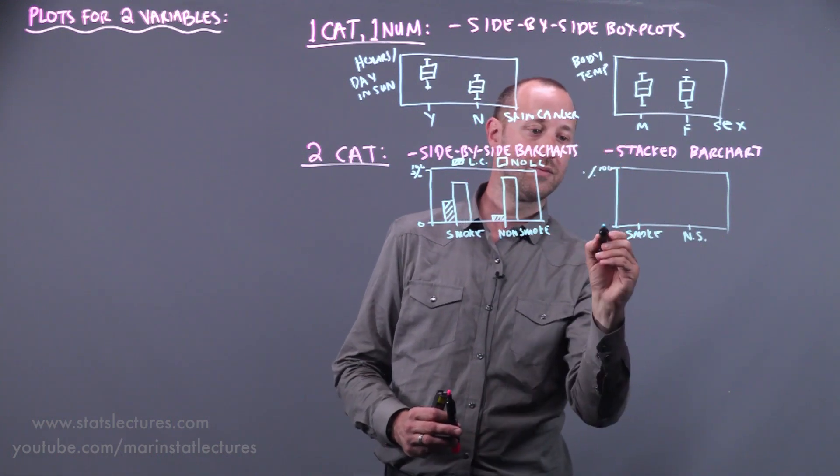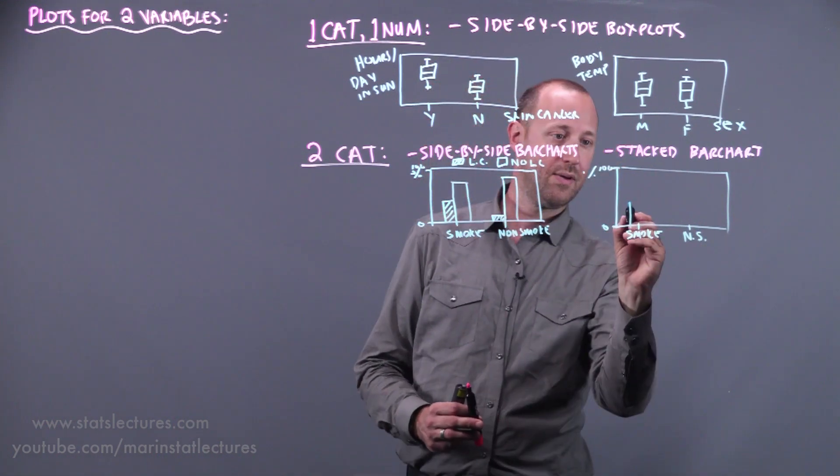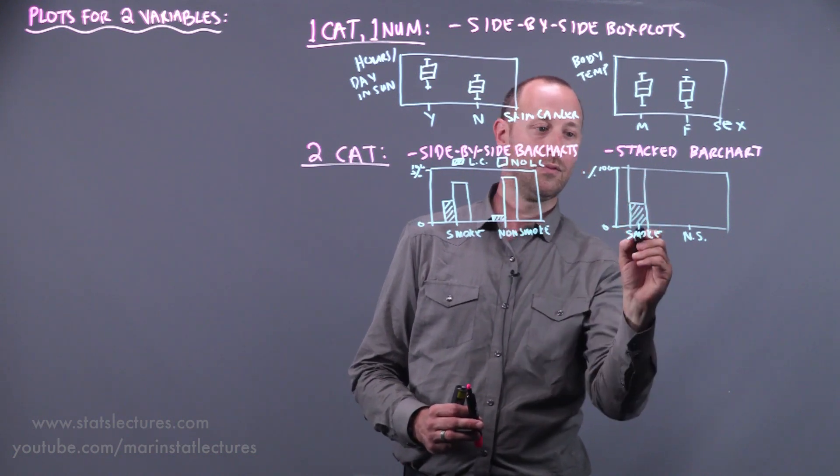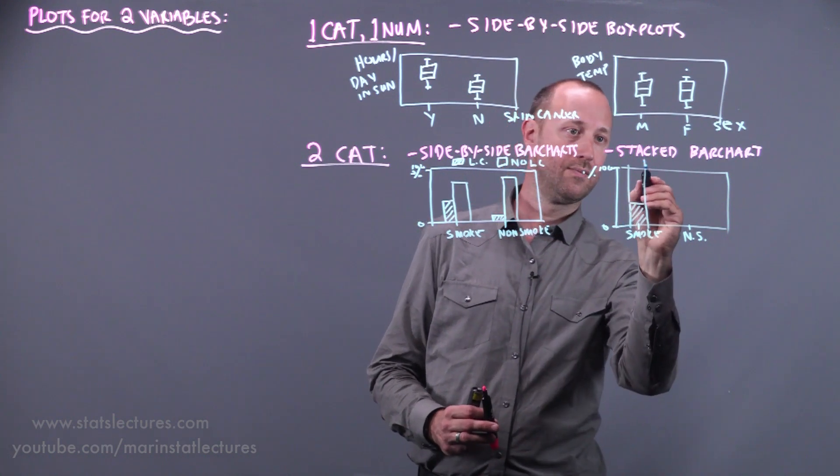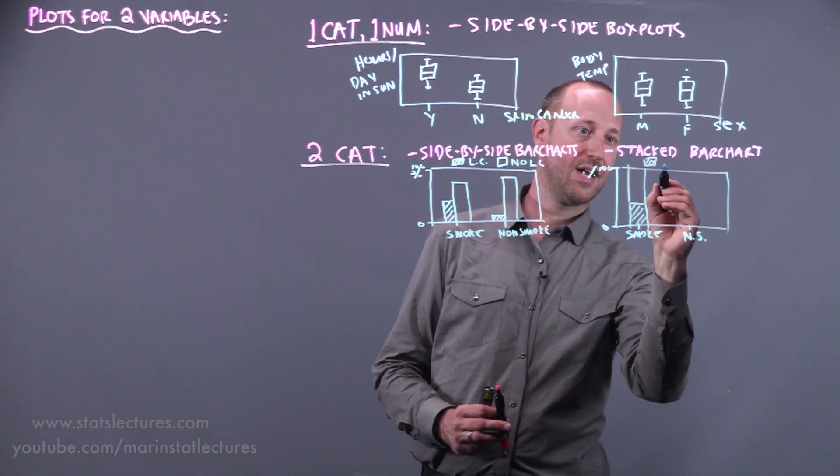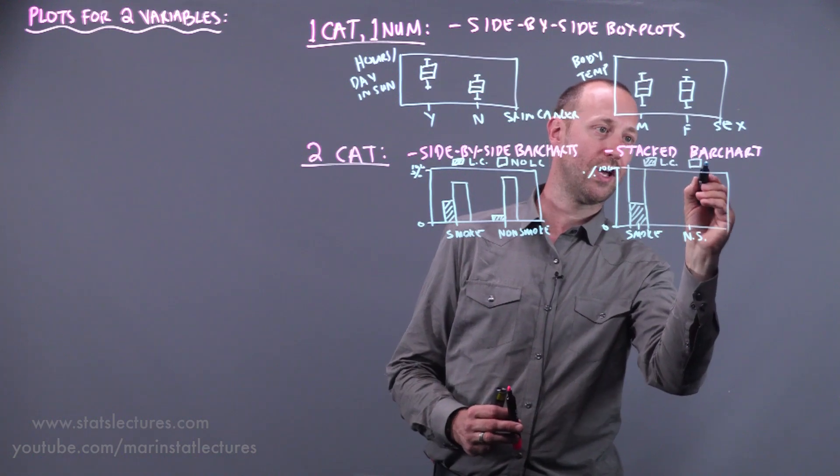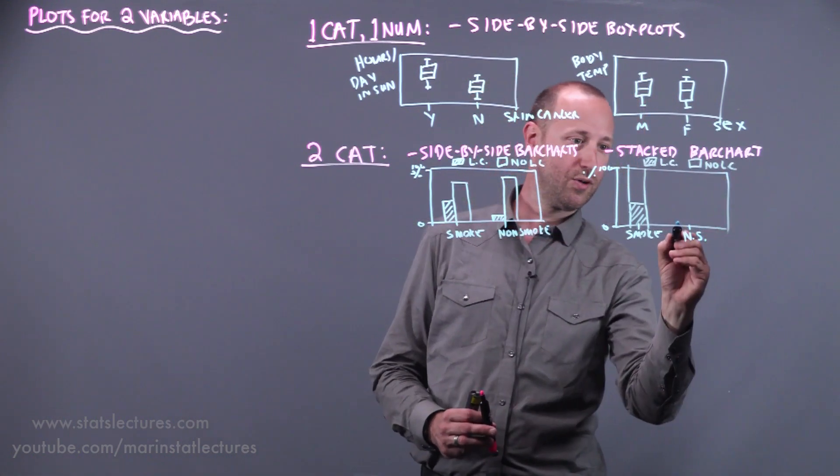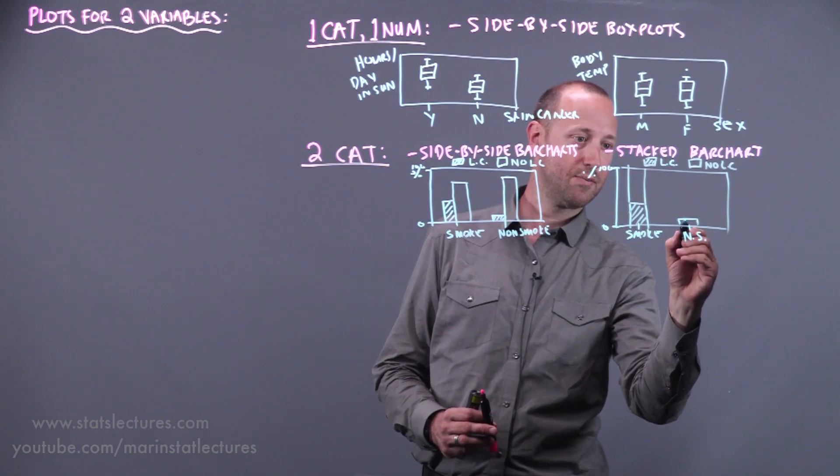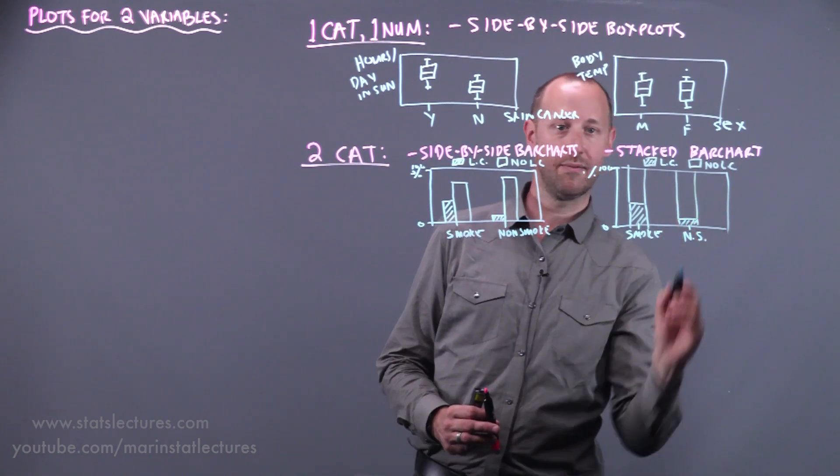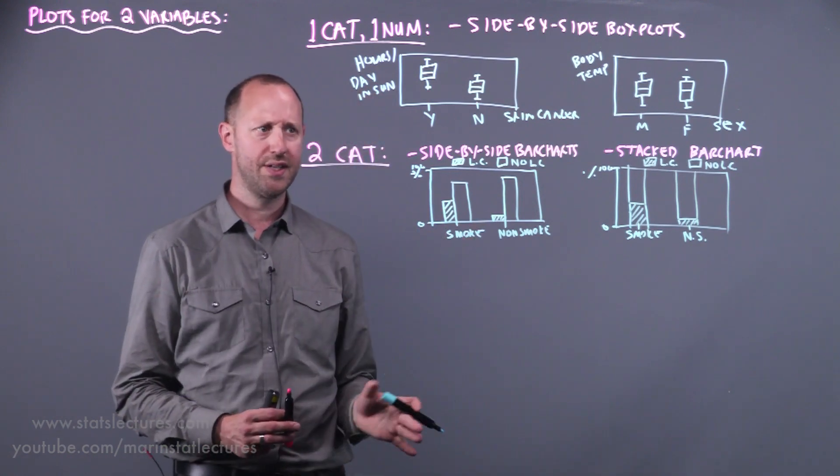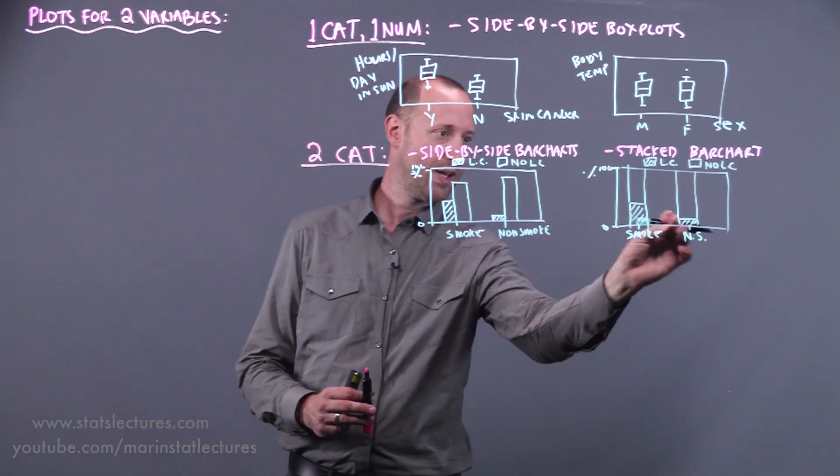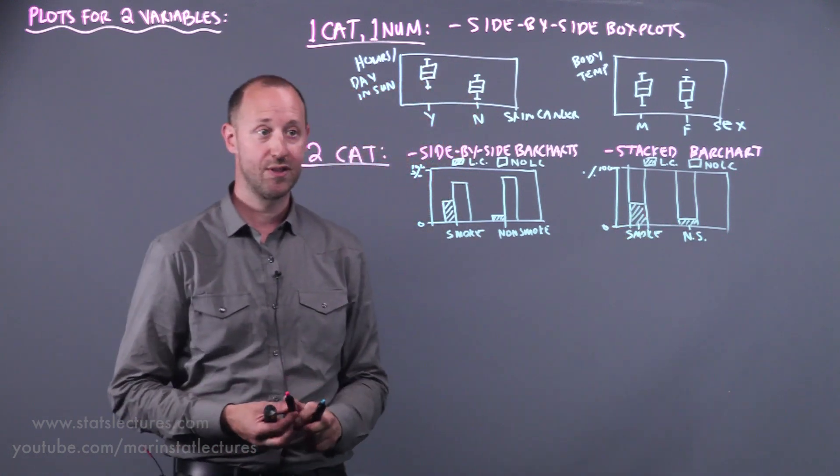Again, here's the percentage going from zero up to 100, and we'd have roughly one-third getting lung cancer, two-thirds not. So again, the dashed lines for those with lung cancer, the no-dashed line for those with no lung cancer. And for the non-smoking group, we have roughly 10% with lung cancer and about 90% without. So pretty similar plot to the side-by-side, except we stack them vertically. So again, here we can see there appears to be an association.